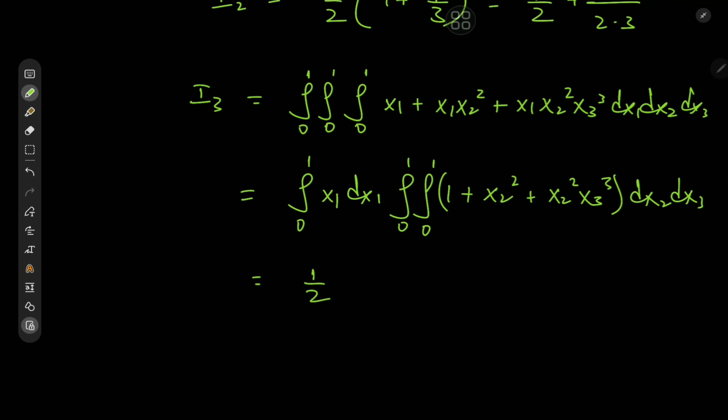So again the integral outside gives us 1/2. And now we might as well invoke linearity. So we have double integral from 0 to 1 of 1 dx2 dx3 plus the double integral from 0 to 1 of x2^2*x3^3 dx2 dx3.